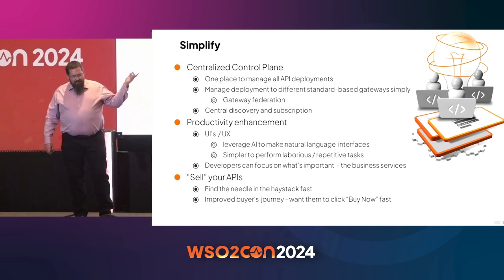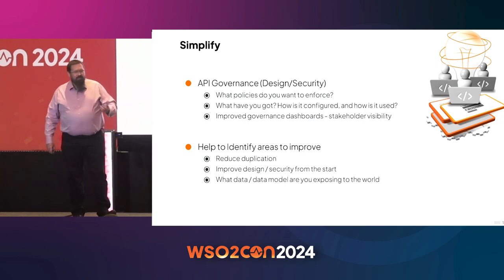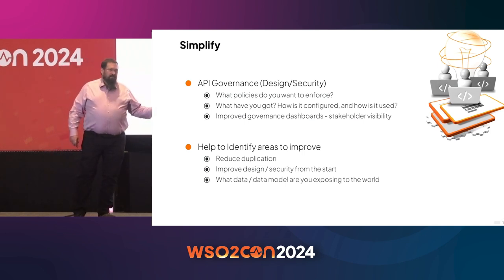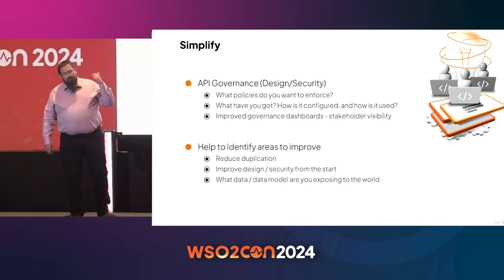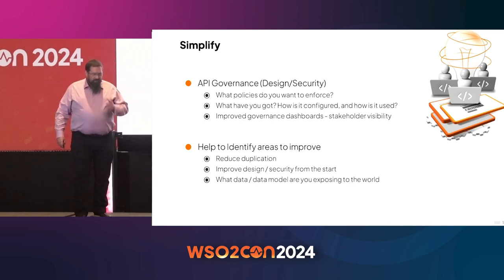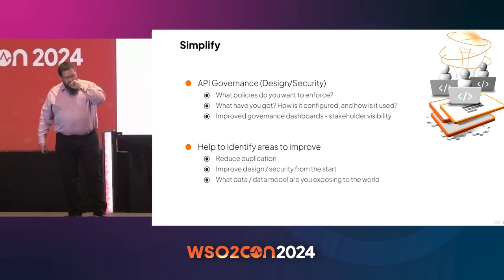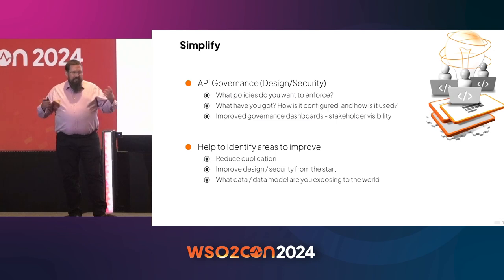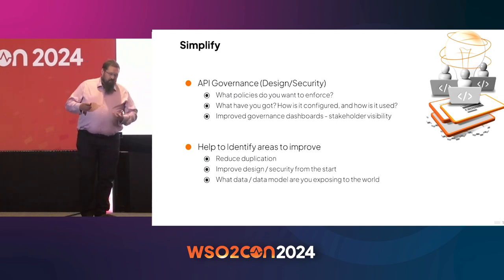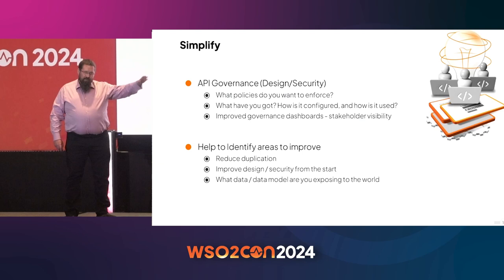Other areas to simplify — and I think Isabel talked a lot about this in the panel — is API governance, especially around design and security. The shifting left of being able to identify any issues before you put something live is critical. Making sure that the right policies are enforced, making sure that you're using the right security standards, but also just getting visibility of what you are using. Governance from a point of view of better dashboards for stakeholder visibility, understanding your API estate a lot easier. This is going to get more and more important the more APIs and more complexity you've got.